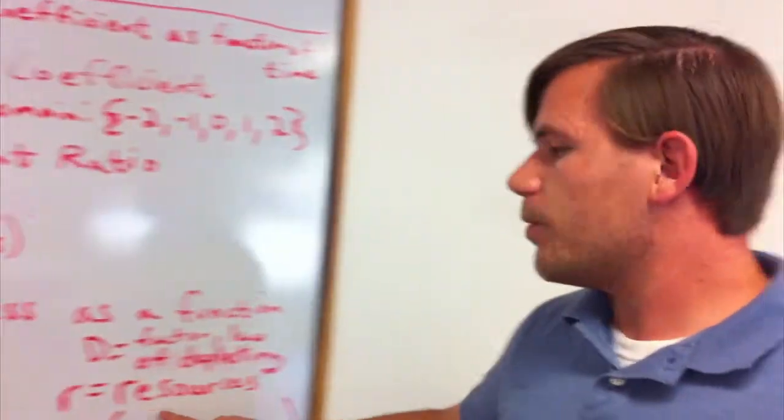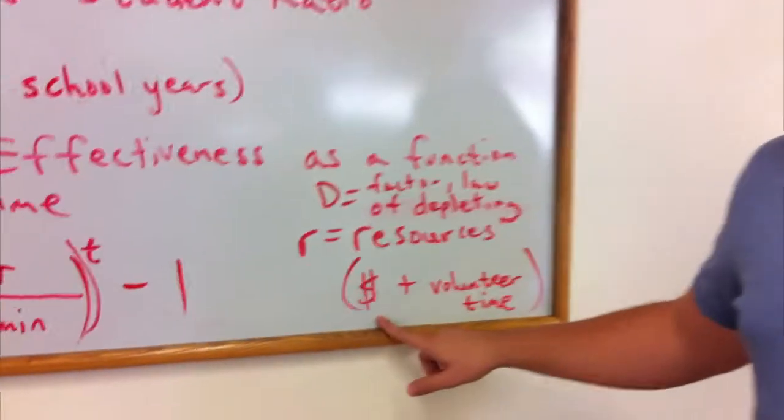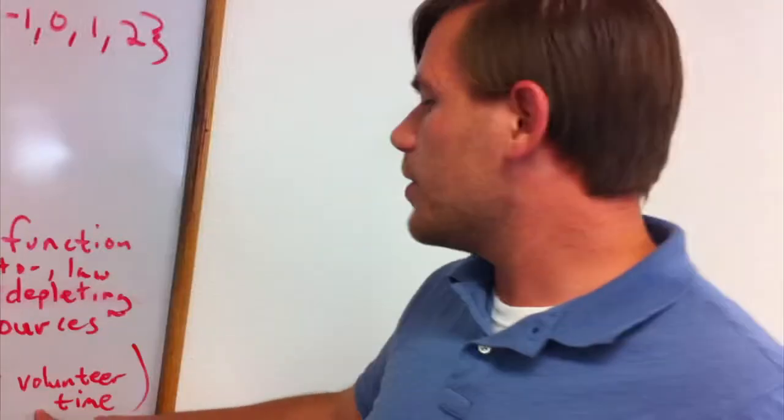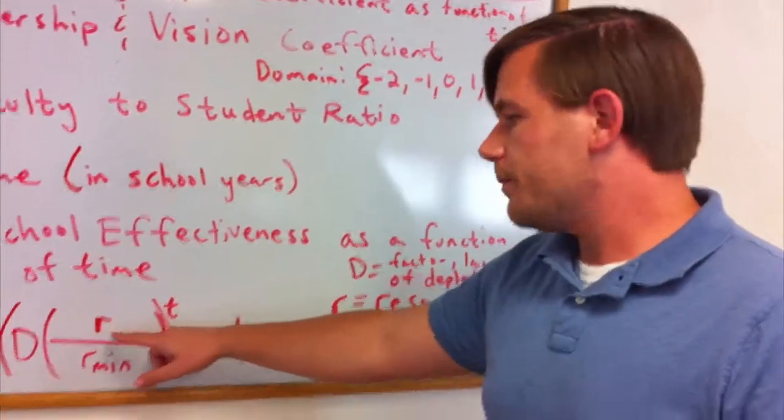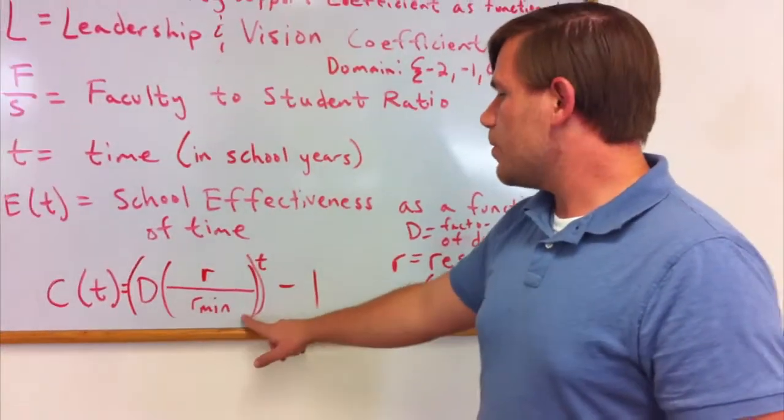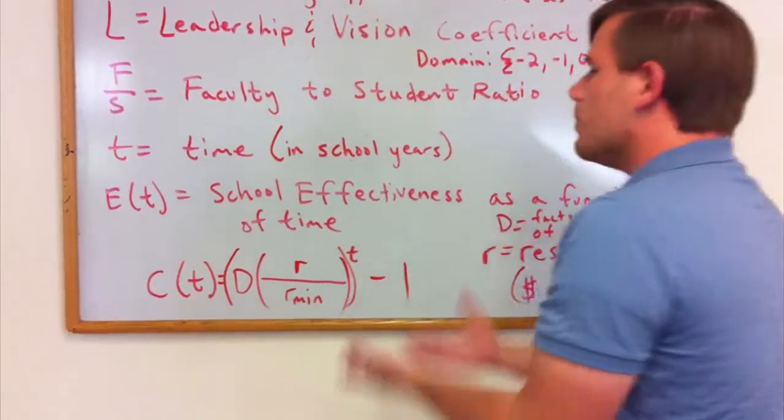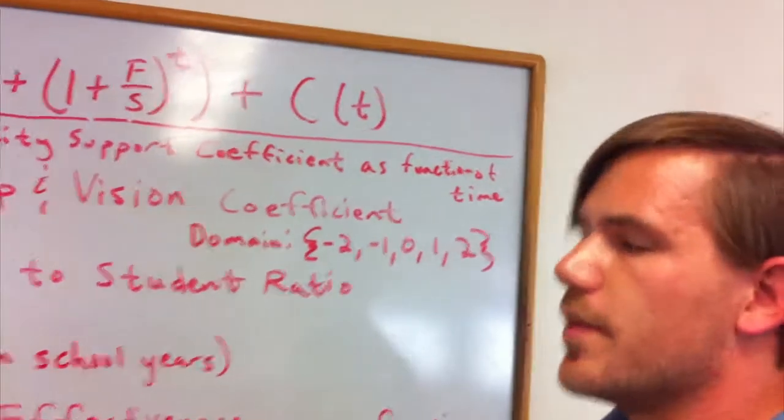R is the total community resources given, and that's in terms of donated money and volunteer time. Those are resources that a community can provide to a school. Now if our resources, community resources given, increase, this quotient increases, and therefore this whole quantity increases above one. What that will do is help to promote the effectiveness of the school.